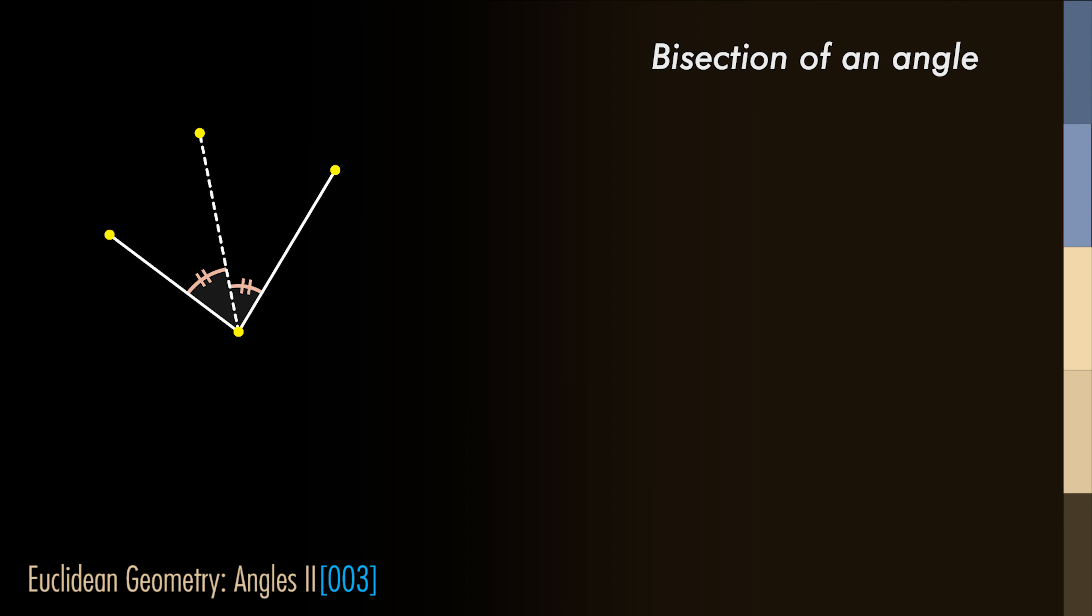A special division of an angle is the one that divides the angle in two equal angles. The line that divides that angle is called the bisector of the angle.